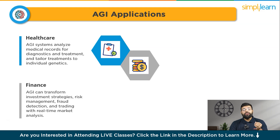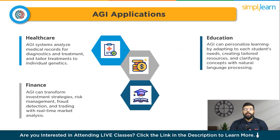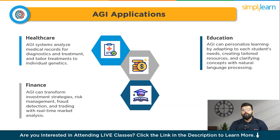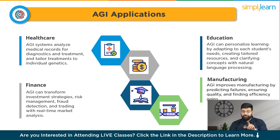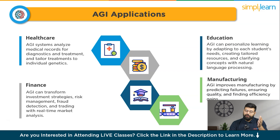In finance, AGI can revolutionize investment strategies, risk management, fraud detection, and algorithmic trading by making faster and more precise decisions through real-time analysis of market trends and economic data. In education, AGI can personalize learning experiences by adapting to each student's unique needs and learning styles, creating specialized resources and using natural language processing to clarify concepts. In manufacturing, AGI enhances efficiency and predictability by forecasting equipment failures, conducting quality control, and analyzing sensor data and production metrics to identify cost-saving opportunities in real-time.